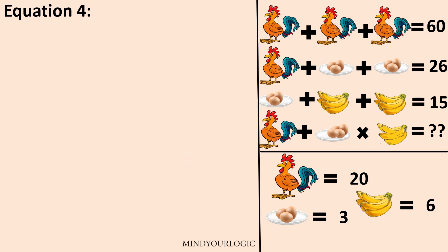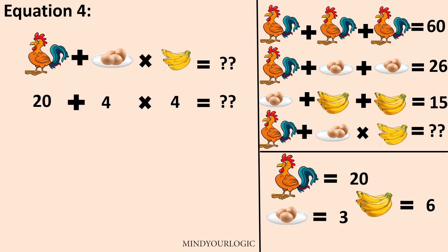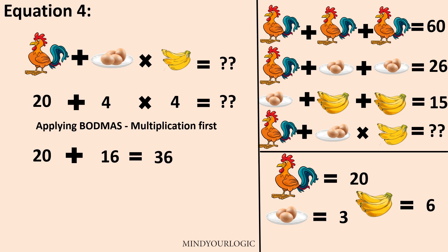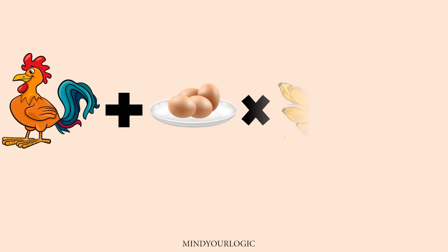Now let's put all these into equation 4. Hen is 20, 4 eggs equal 4, 4 bananas equal 4, so it's 20 plus 3 into 4. Applying BODMAS first, 4 into 4 will be 16, and 20 plus 16 will be 36. So the final answer is 36.